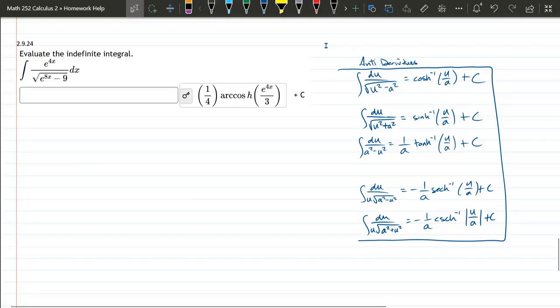We have this antiderivative problem to do. It comes from 2.9, which means it should use one of the inverse hyperbolic trig antiderivative forms. Those are all on the right side of the screen.